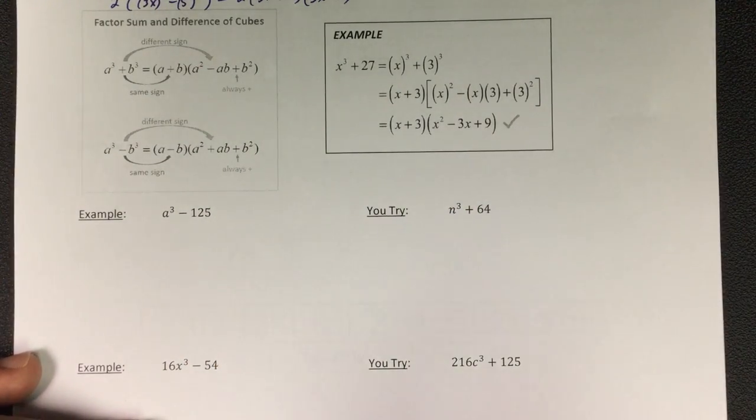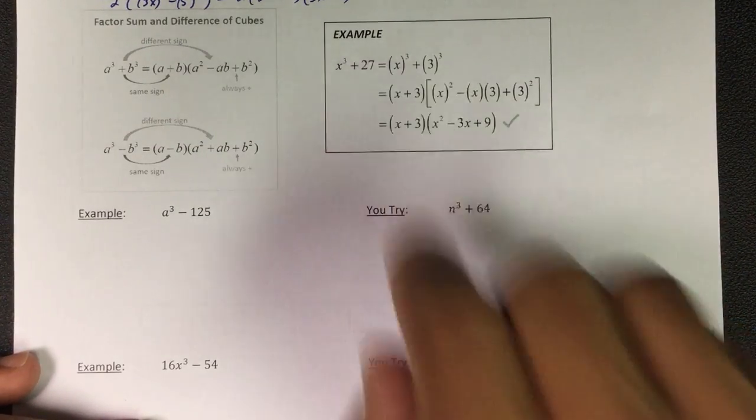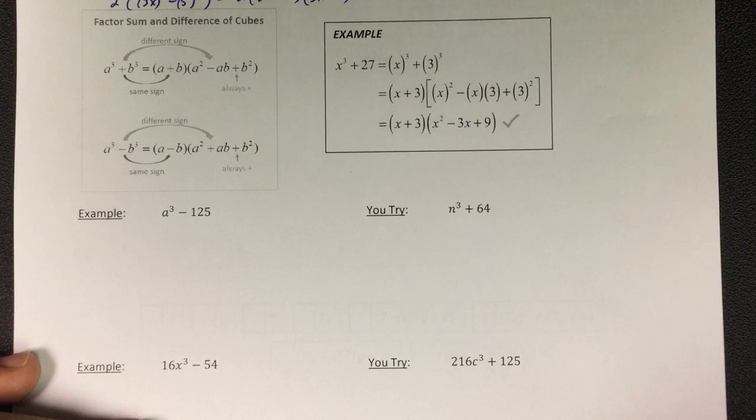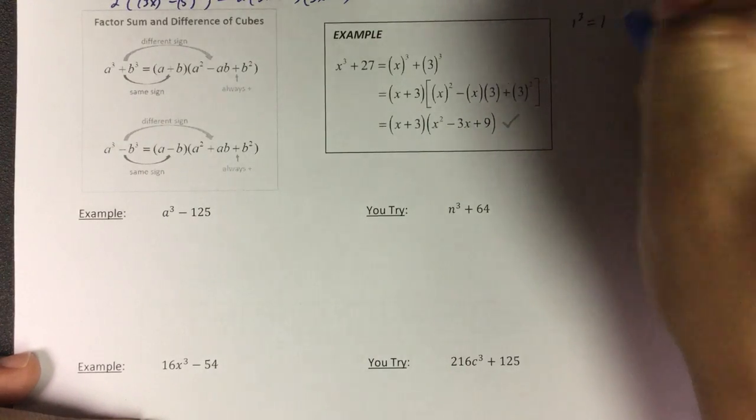So 27 is 3 cubed. Like I've told y'all before, I would use a calculator and go ahead and cube all the numbers. Like 1 cubed is 1.